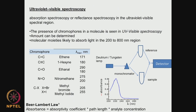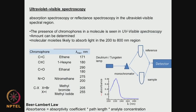UV-Vis uses Beer-Lambert's law: absorbance equals the absorptivity coefficient multiplied by the path length and the concentration of the analyte. From the absorbance, we can calculate analyte concentration, and vice versa. This is a very useful technique.